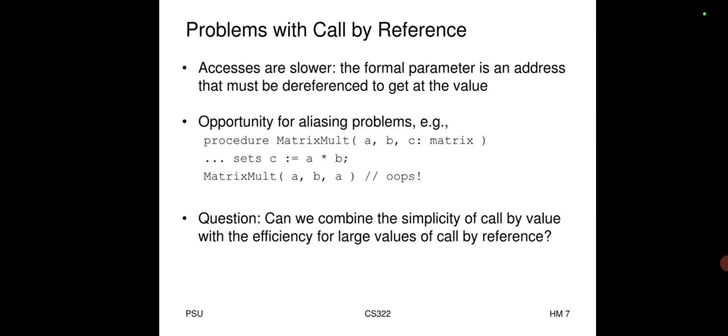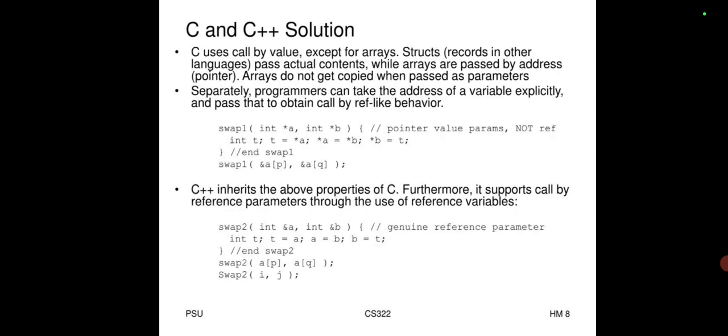Problems with call by reference: accesses are slower because the formal parameter is an address that must be dereferenced to get the value. This creates opportunity for aliasing problems. Example: procedure matmul(a, b, c). Question: can we combine the simplicity of call by value with the efficiency of call by reference for large values? C and C++ provide a solution.